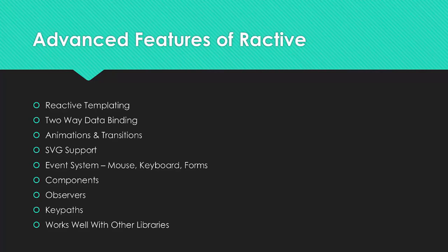We can do things like animations and transitions. Transitions allow us to control how elements are first rendered in the DOM and how they're removed, with effects like fading, sliding, and others. SVG, or Scalable Vector Graphics, are also supported, and we can do cool things using different shapes with the SVG tag. Data-driven graphics like charts and graphs are possible. Reactive also has its own event system, so we can create a click or tap function on a button and have another element in the DOM respond without re-rendering the page. Components are also used, much like ReactJS — they encapsulate behavior and make things easier to understand for yourself and other developers on the project.